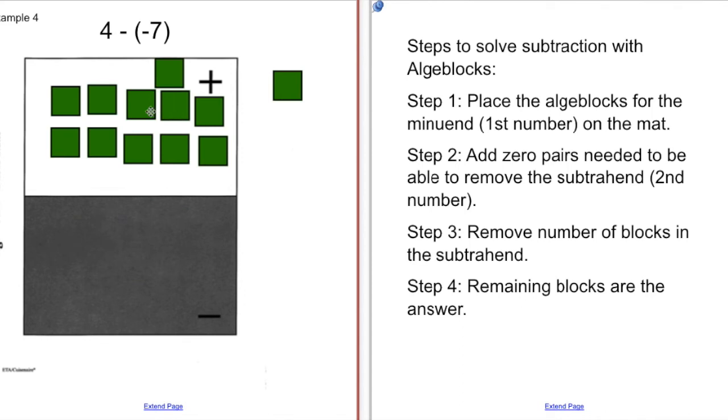So I can take away my 7. And that leaves me with 1, 2, 3, 4, 5, 6, 7, 8, 9, 10, 11. So 4 minus negative 7 equals 11.